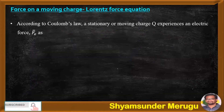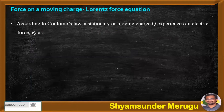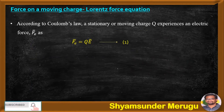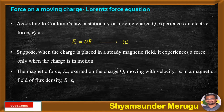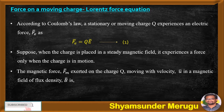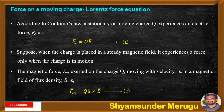According to Coulomb's law, a stationary or moving charge Q experiences an electric force Fe bar, and Fe bar can be written as Fe bar equals QE bar. Let us consider this as equation 1. Suppose when the charge is placed in a steady magnetic field, it experiences a force only when the charge is in motion. The magnetic force Fm bar exerted on the charge Q moving with velocity U bar in a magnetic field of flux density B bar is Fm bar equals QU bar cross B bar. Let us consider this as equation 2.